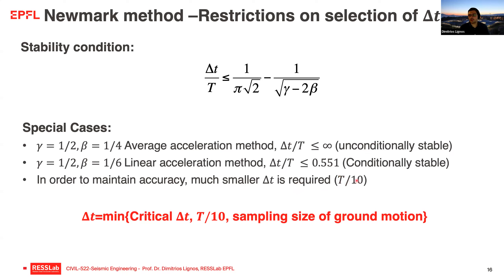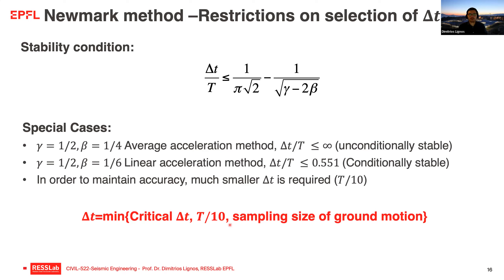To ensure a reasonably correct solution, the critical time step should be the minimum of three values: the critical Δt from the stability condition, an empirical value of T/10, and the sampling interval of the ground motion record. If the ground motion is sampled at 0.001 seconds, that could control the critical time step to use in the solver.